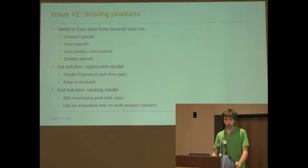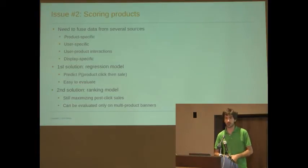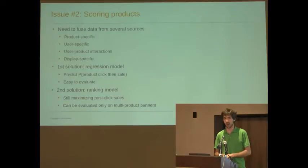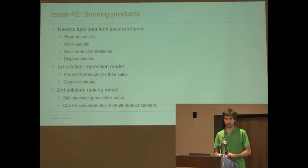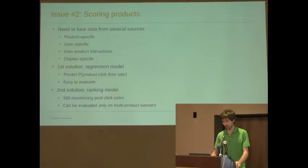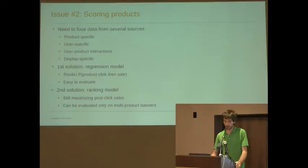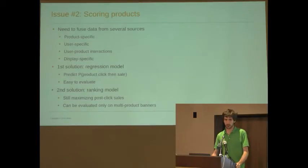The second issue is how do you actually score the product? We need to fuse data from several sources. Some of it is product specific — say, the price or category of the item. User specific — say, how long has it been since the user last went to the merchant website. Interactions between the user and the product: has the user seen the product? Has the user seen similar products? Has he actually bought similar products in the past? And display-specific features — for instance, the website onto which we publish the advertisement has a lot of weight in the prediction.